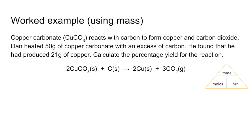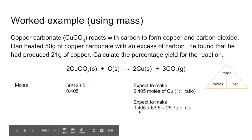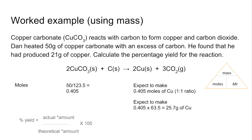The mass method starts off exactly the same: calculate moles of copper carbonate as mass over Mr — 0.405 as before — and he expects to make the same number of moles of copper from the ratio. Now we convert that to grams: moles times Mr of copper gives an expected 25.7 grams. He actually made 21 grams. Putting those into the formula: 21 over 25.7 times 100 gives exactly the same answer — 81.7, so 82% to two significant figures. Both methods give the same result.